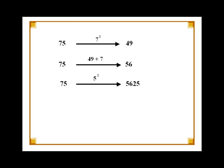Let's try another 2 digit number, 75. In the first step, we square the digit on the left of 5, so squaring 7 gives us 49. As earlier, we then add 7 to 49 to get 56. Next, we square the rightmost digit 5 to get 25.